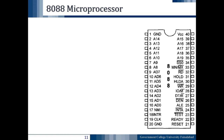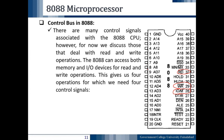Next we move to the control bus of the 8088 microprocessor. In this slide we will discuss pin number 28, pin number 29, and pin number 32, which are responsible for the input/output and memory read and write operations. There are many control signals associated with the 8088 microprocessor, however for now we discuss those that deal with the read and write operations.